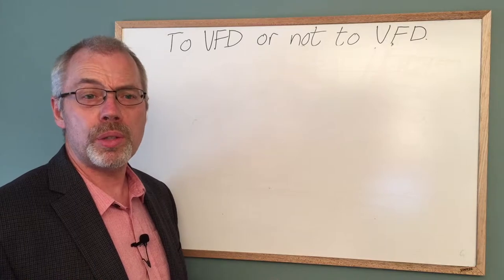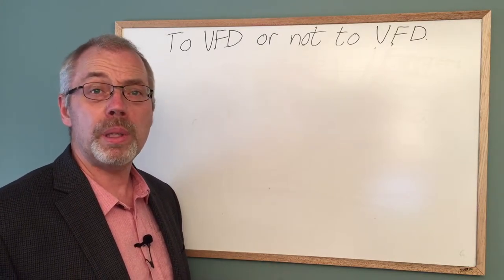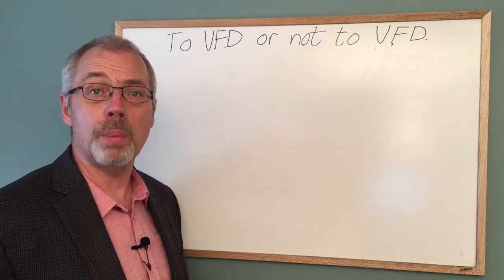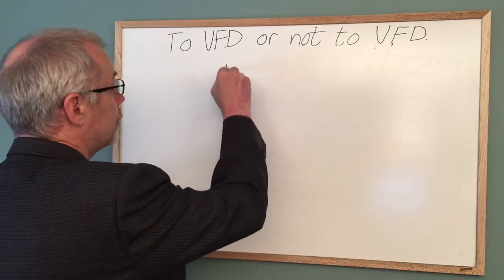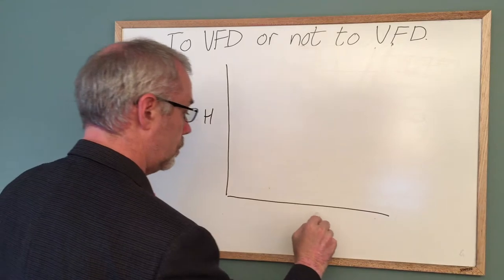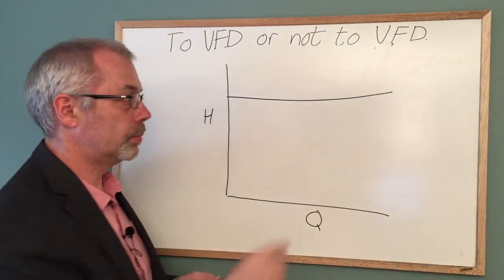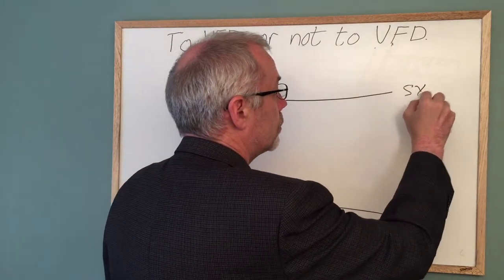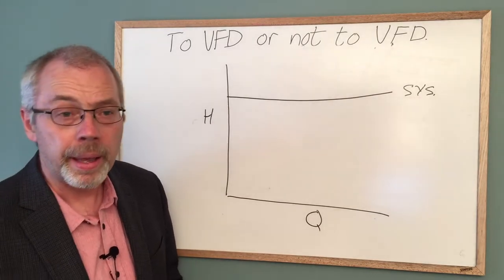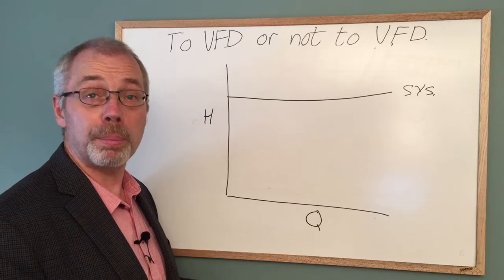Let's change this to a system with a large gain in static head and very little friction. This could be lifting water up to a high altitude or pumping liquid to the top of a distillation tower. And again, we will look at a pump curve with a fairly steep pump curve.